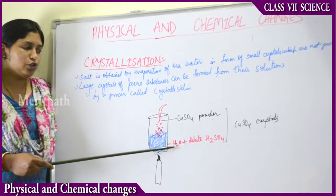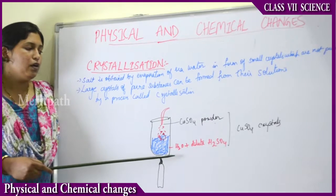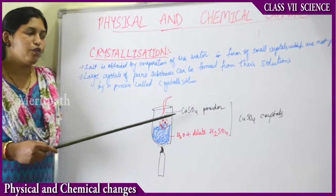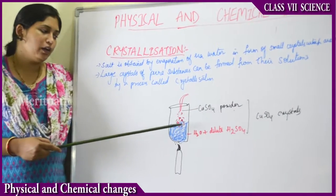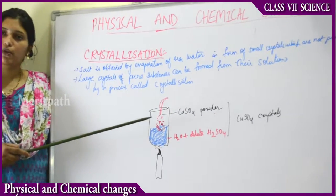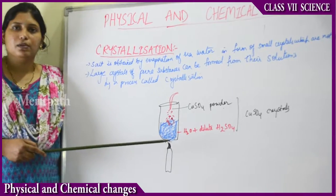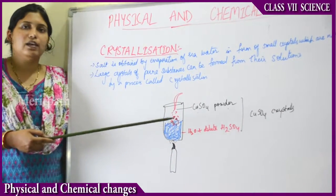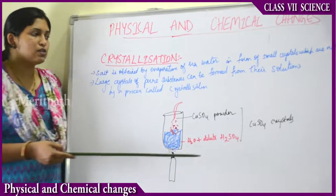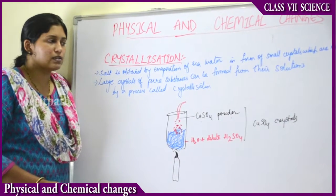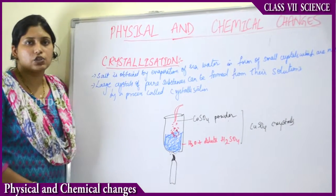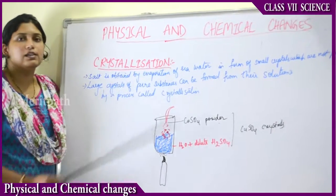Keep adding copper sulfide powder to the heated solution of water plus dilute sulfuric acid, continuously stirring, until no more powder can dissolve. Then remove it from the flame, strain it through a strainer, and keep it undisturbed for at least one hour. After some time, you will see the formation of blue-colored copper sulfide crystals. This is one more method to demonstrate crystallization. Crystallization is a physical change. This completes the lesson on physical changes and chemical changes.